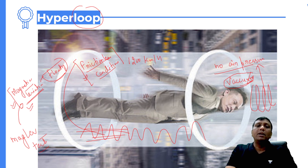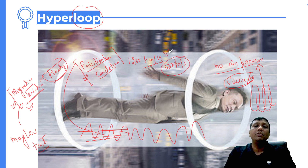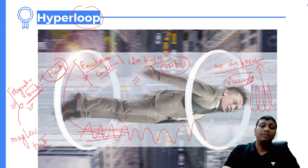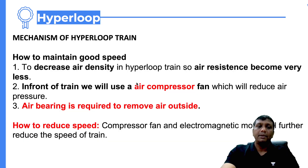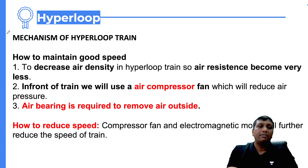With the frictionless condition on the underside and vacuum-type conditions at the front, the speed can very easily reach around 1200 kilometers per hour. 1200 kilometers per hour is near the speed of sound, which is approximately 332 meters per second. So with the help of this train, you are actually moving at nearly the speed of sound — it is very, very interesting.